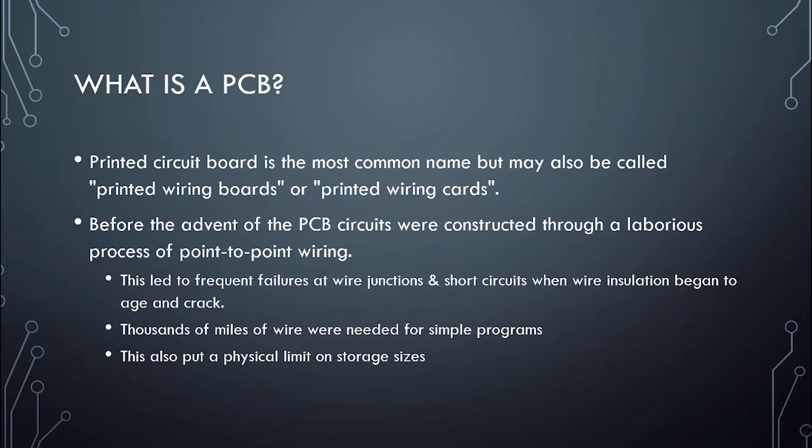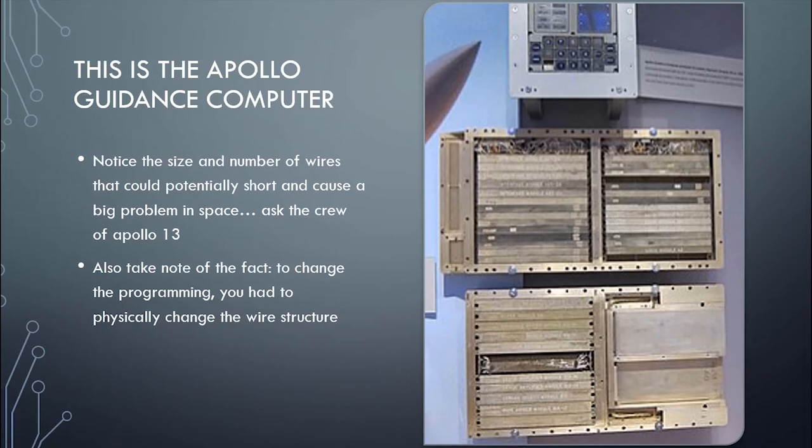Wires lead to failure — you can fail at a junction, get a short circuit where two wires that aren't supposed to touch do touch, and insulation begins to age and crack. Simple programs needed miles of wires, which put physical limitations on size. There is a physical limitation to the amount of current and energy you can put through wires, whereas with PCBs and traces we can get much higher voltage much closer together.